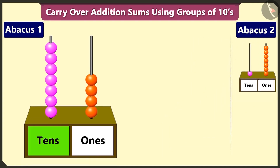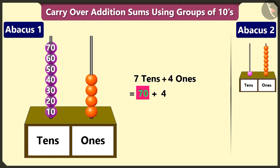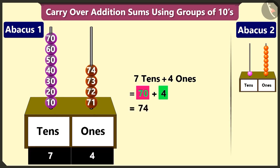In the first abacus, in the tens box there are 7 beads, which makes it 7 tens — that is 70. And in the ones box there are 4 beads, which makes it 4 ones — that is 4. Now to add 4 to 70, count after 70: 71, 72, 73 and 74.